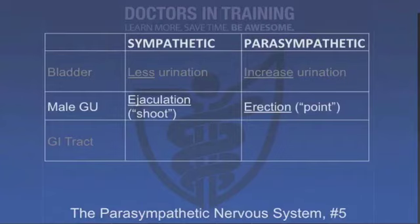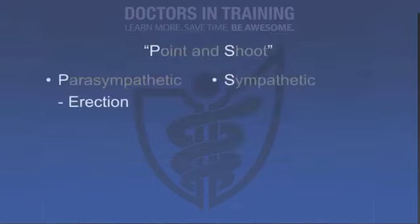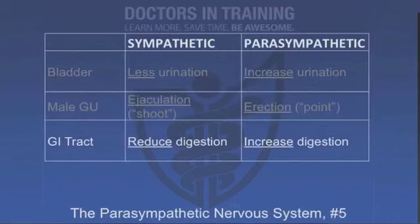Parasympathetic stimulation increases urination by relaxing the sphincter and contracting the bladder trigone and detrusor muscle. In the male GU system, parasympathetic innervation causes erection, and sympathetic innervation causes ejaculation. You can remember 'point and shoot' — P for parasympathetic and point, S for sympathetic and shoot. In the GI tract, sympathetic innervation reduces digestion, while parasympathetic innervation increases GI motility, GI blood flow, and digestion.